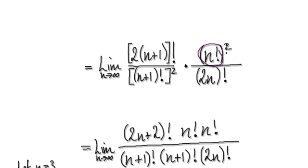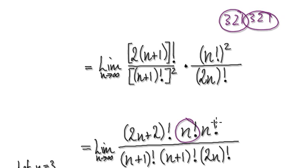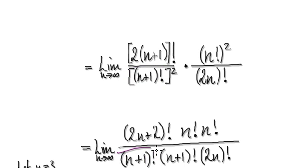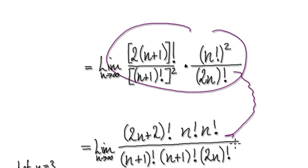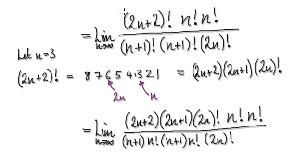n factorial squared means n factorial times by itself. For example, if n is 3, then 3 factorial squared means this. And n plus 1 factorial squared means n plus 1 factorial times by its exact same self. So times by its exact same self — that would then give you this. This whole thing here would then become this, and this bit here would be this times this, this times this. That would then give you this, taking you to here.